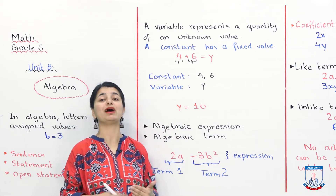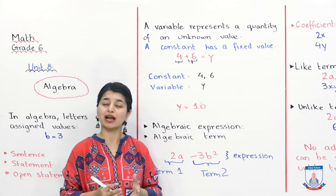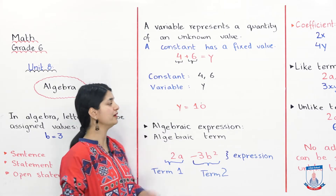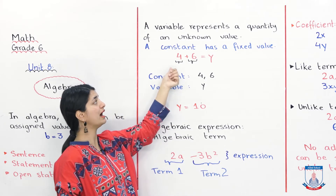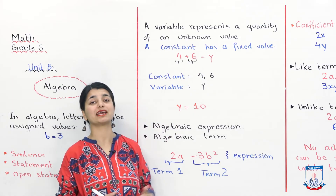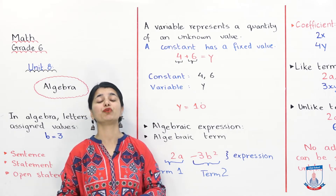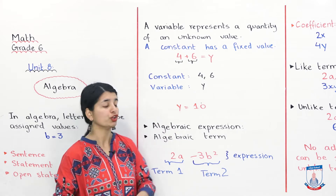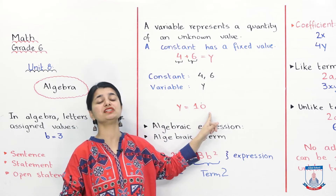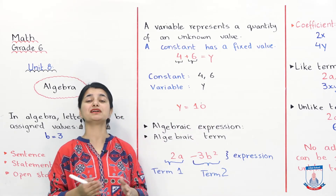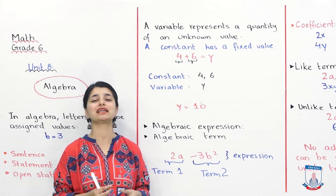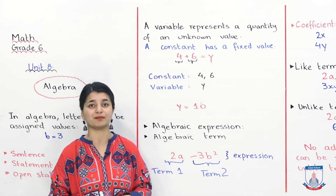The question would be: you have an unknown value, and you will find it out. How? You will solve it. When you add 4 plus 6, you will figure out the answer. 6 plus 4 is 10, so the value of y becomes 10. In this way we can solve our variables — we have some constants and some variables, and in this way we can solve equations.